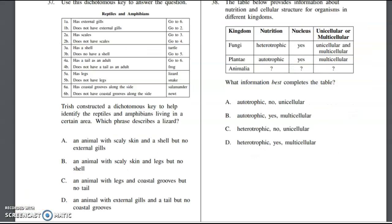Number 37, Trish constructed a dichotomous key to help identify the reptiles and amphibians living in a certain area. Which phrase describes lizards? Animal with scaly skins and a shell? Nope. Animal with scaly skins, legs, and no shell? Yes, it has legs, no shell, and scaly skin.